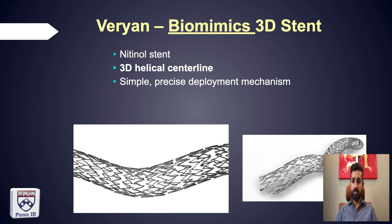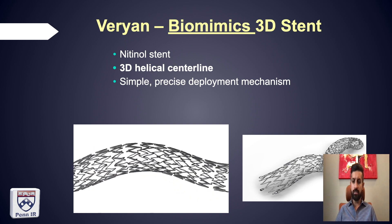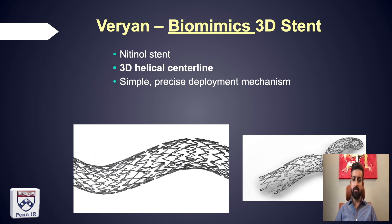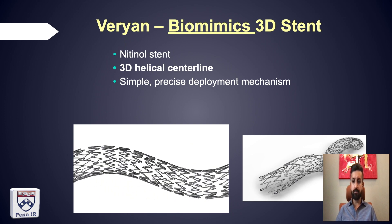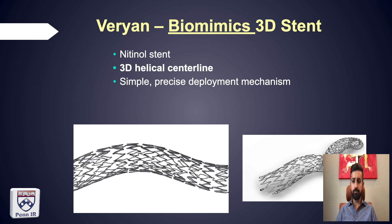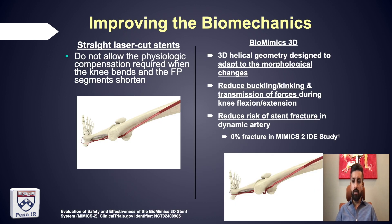The last stent is the Biomimics 3D by Veryan. It's a laser-cut nitinol stent with a unique 3D helical centerline and a straightforward pin-and-pull deployment mechanism. Straight nitinol stents do not allow physiologic compensation with knee flexion and result in deformation proximal and distal to the stent. The 3D design adds flexibility and essentially builds in a crumple zone in the stented segment, allowing less transmission of forces and less buckling and kinking of adjacent unstented segments, more movement of the stented segment, and fewer fractures.